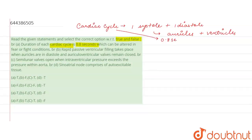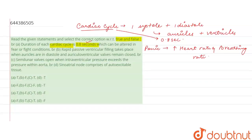This cardiac cycle is of 0.8 seconds, as given in the statement, so that is correct. It can also be altered during fear and flight conditions — that is also true. In fear or flight conditions, the person is in a panic mode, which increases the heart rate and breathing rate. The heart pumps blood faster, so the cardiac cycle duration changes. When conditions normalize, it takes around 20 minutes for the cardiac cycle to return to normal. So the first statement, A, is true.